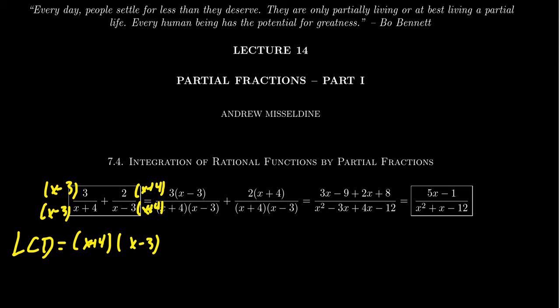With common denominators, we can add the numerators. Distributing the 3 gives us 3x-9. Distributing the 2 gives us 2x+8. Adding like terms: 3x+2x equals 5x, and -9+8 equals -1. So the numerator becomes 5x-1.